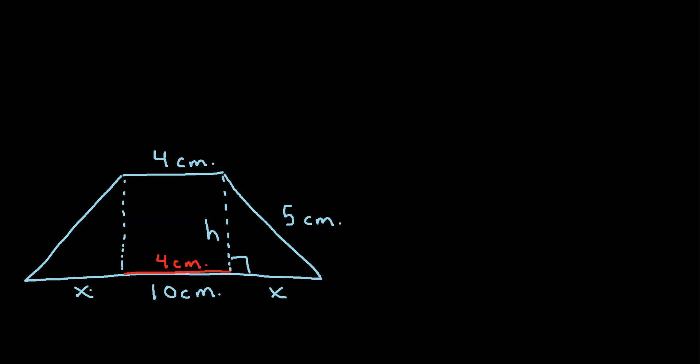So how can we do that? Well, we know that x, whatever it is, plus 4 cm, plus x must add up to 10 cm. So what we can say is 10 is equal to 4 plus x plus x. So we can solve for x.